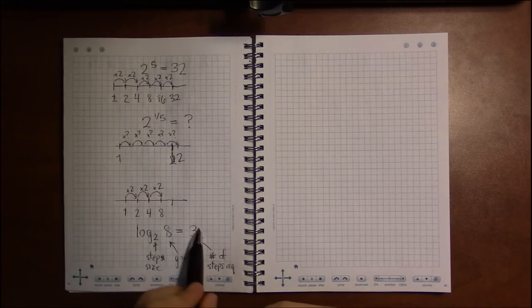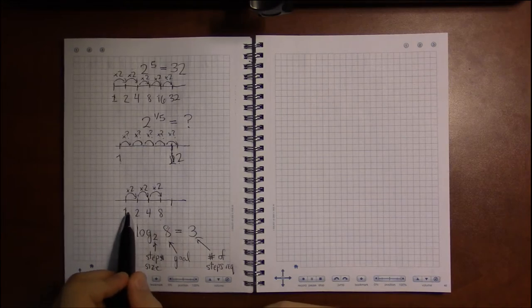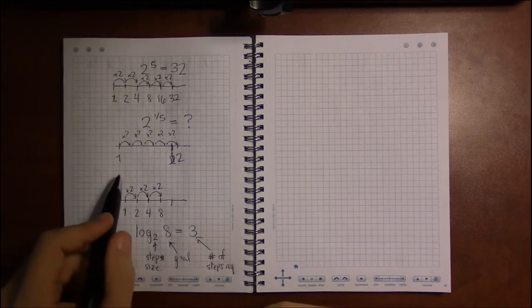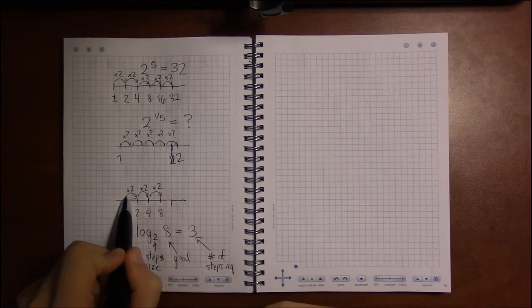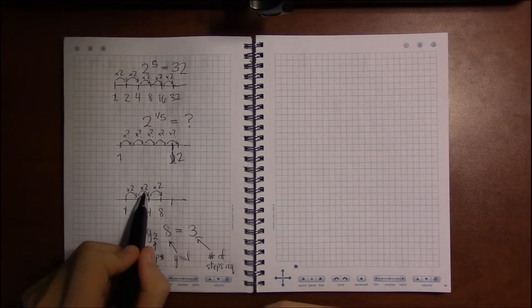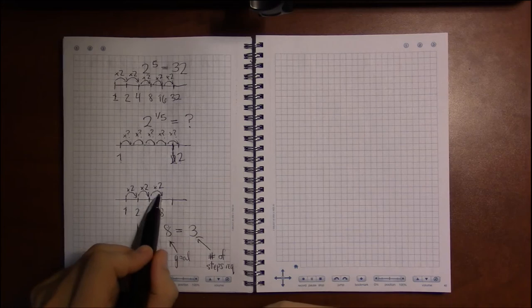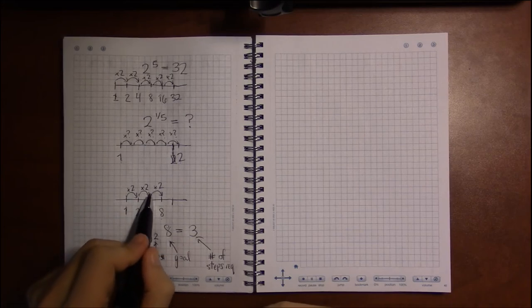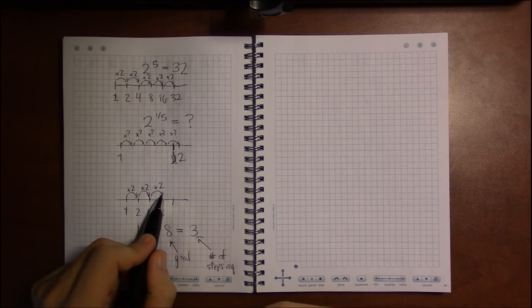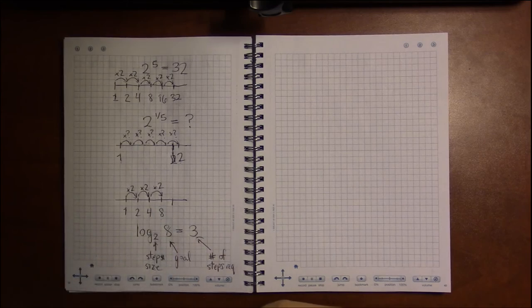Whereas with logs, we know where we're starting, we know where we're ending, but this time, we know the size of our steps. Our question is, how many times do we have to do this step in order to get to our goal?